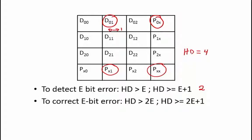We also know that to correct an e-bit error, the Hamming distance has to be greater than 2e, or the Hamming distance has to be greater than or equal to 2e plus 1. So, to correct a 1-bit error, one needs to have a Hamming distance greater than or equal to 3. For this encoding, since our Hamming distance equals 4, that means we should be able to both detect and correct 1-bit errors.